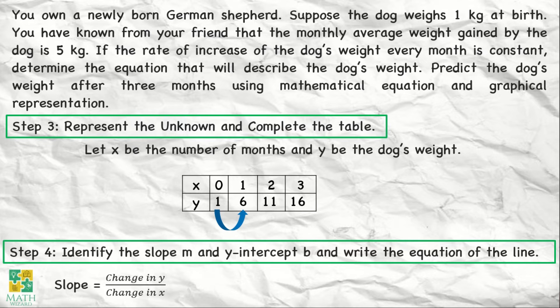From 1 naging 6, ibig sabihin yung change is 5. From 6 naging 11, yung change ay 5. From 11 naging 16, ibig sabihin yung pagbabago is 5, nadagdagan ng 5. Tingnan naman natin sa change in x. So from 0, it becomes 1. From 1 naging 2. From 2 naging 3. Ibig sabihin, yung change in x is 1. Kaya, ang magiging sagot natin is 5 over 1. Kasi yung change in y is 5, at ang change in x is 1. And 5 over 1 is equal to 5.